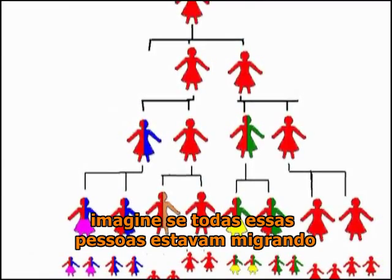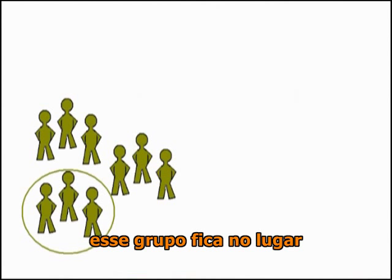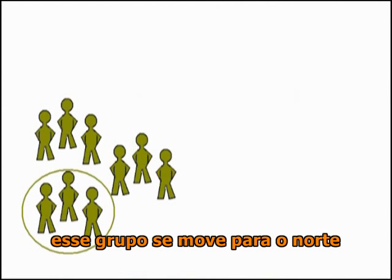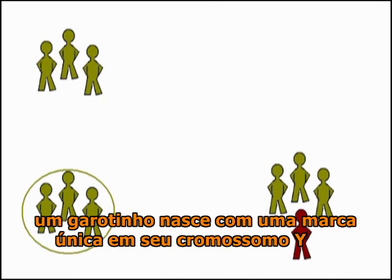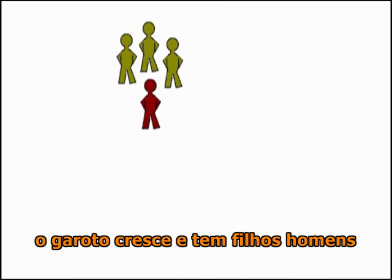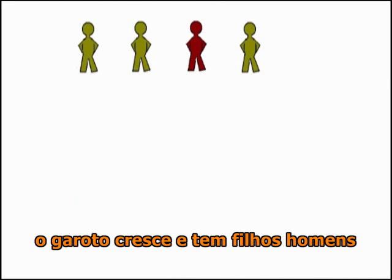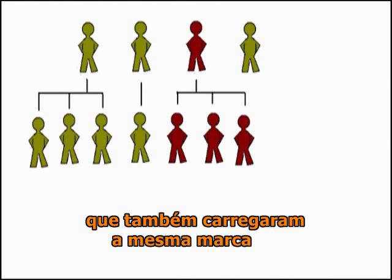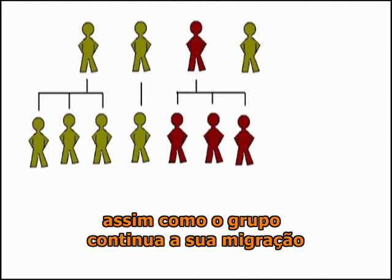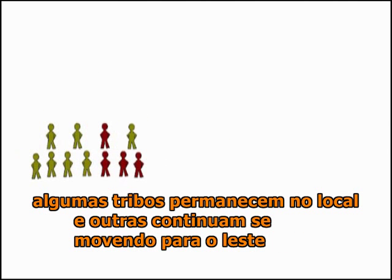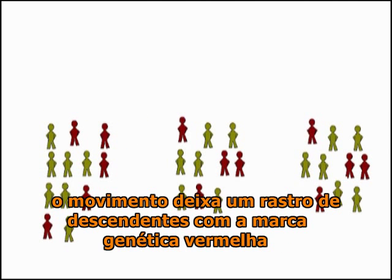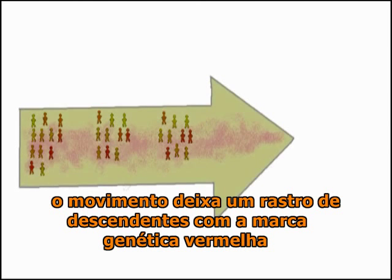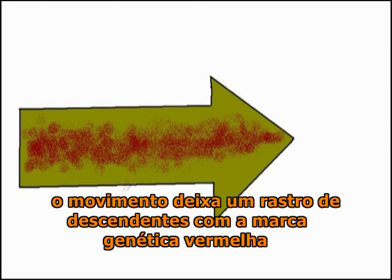Now imagine if all these people were migrating. This group stays put, this group moves north, and in this group headed east, a baby boy is born with a unique marker on his Y chromosome. The baby grows up and has male children who also carry the same marker. As the group continues its migration, some tribes settle and others keep moving eastwards. Like a leaky boat, the movement leaves in its wake a trail of descendants with the red genetic marker.